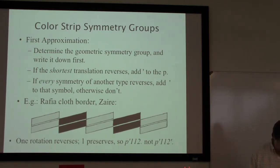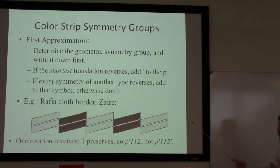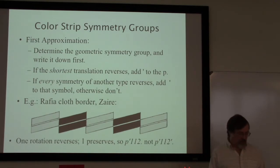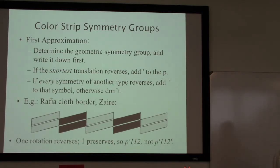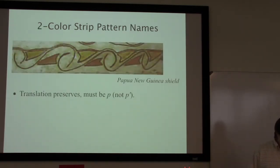This is one of the reasons why it's really important to make sure we've found both rotations when there are two of them, or both vertical reflections when there are two of them — otherwise we'll get the name completely wrong.